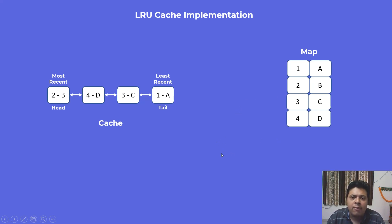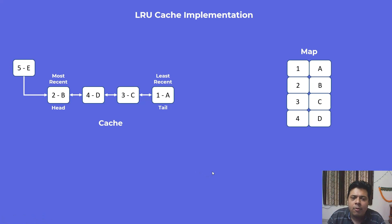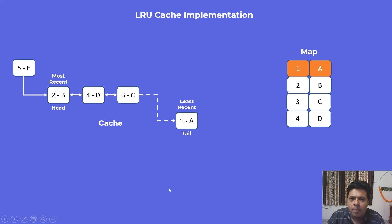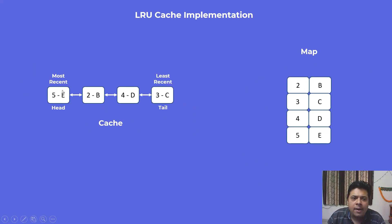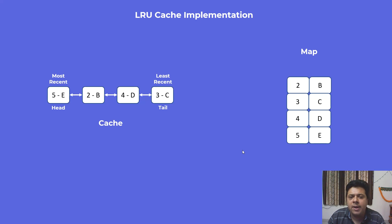Now consider a new element coming in: key 5, value E. Our cache is full, so we have to remove the least recently used element, which is element 1A. We remove it from the doubly linked list and also from the map data structure. The new element 5E now becomes the most recently used element, and 3C becomes the least recently used since all other elements shift towards the right. This insertion has happened in O(1) time complexity.